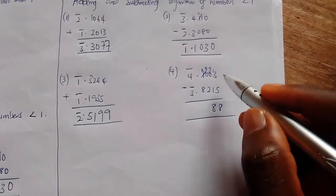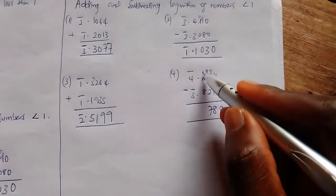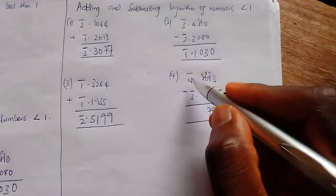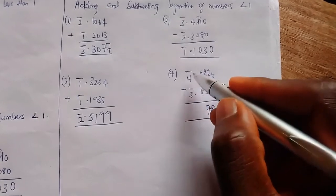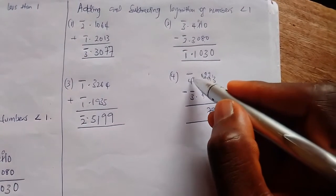Zero, you cannot subtract it, so I would borrow one from minus four. If I borrow one from minus four, it's as though saying minus one minus four, so this becomes minus five.